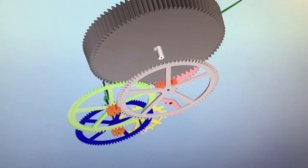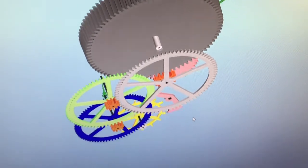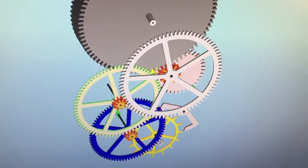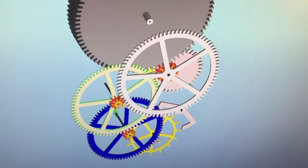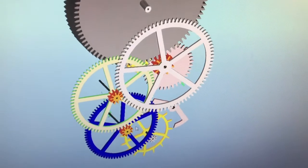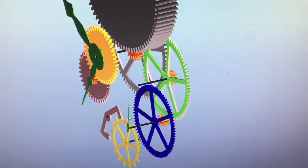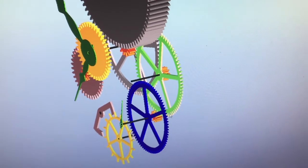I have the mainspring barrel here, Gear 1, and the center wheel, which is Gear 2. Then an intermediate wheel, Gear 3, with a pinion on top connecting to the center wheel. The fourth gear here is where the second hand attaches, and you can see I've got a second hand modeled on the pinion and pivot.